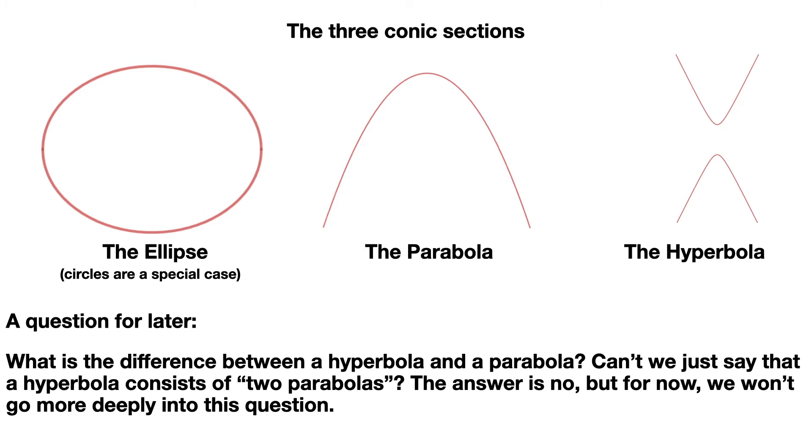you should have noticed that there are three basic shapes that come up repeatedly throughout the course of these explorations. The ellipse, of which the circle is a special case, and an ellipse can basically be thought of as a stretched circle, a parabola, and a hyperbola. And the question for later is, what's the difference between a hyperbola and a parabola? Can't we just say that a hyperbola consists of two parabolas? And the answer is no, but for now, we won't go more deeply into this question.